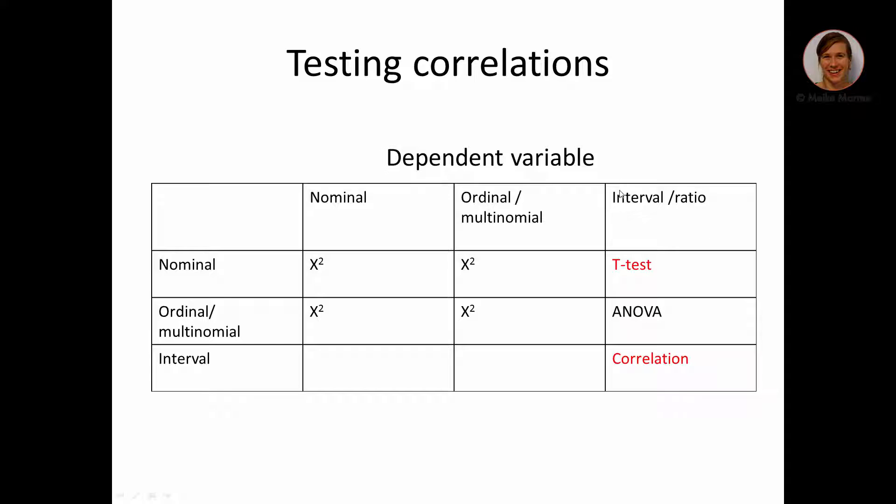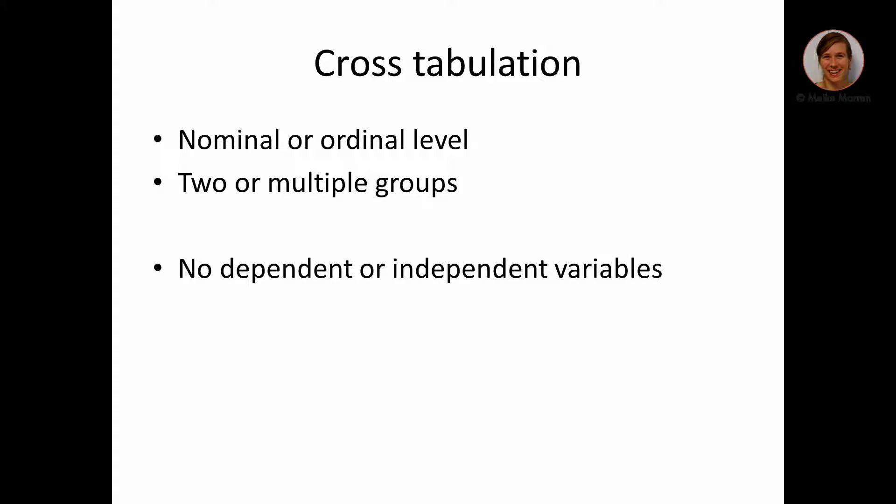Lastly, if both variables are measured at the interval level, you can use a correlation. A cross-tabulation tests the relationship between nominal or ordinal level variables, or you compare two or multiple groups. There are no dependent or independent variables. So it does not matter which ones are the rows and which ones are the columns, not for the statistics.